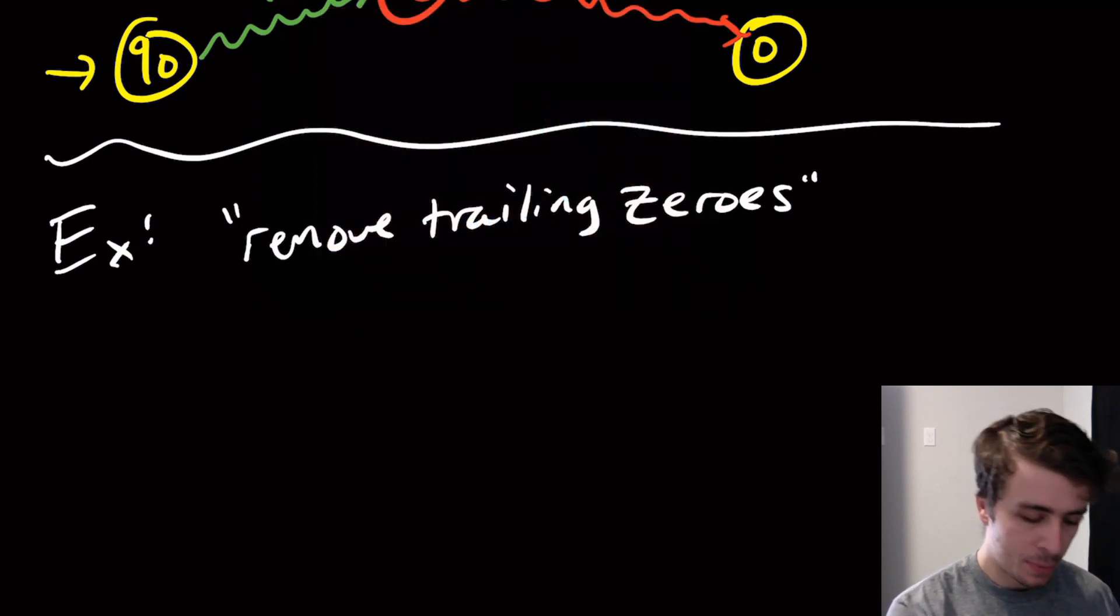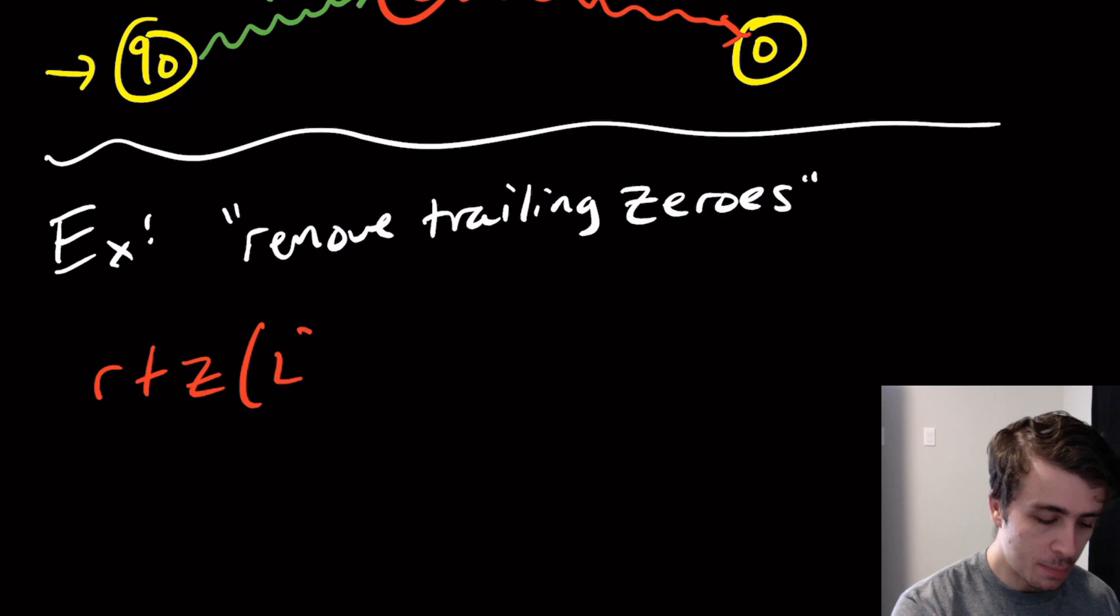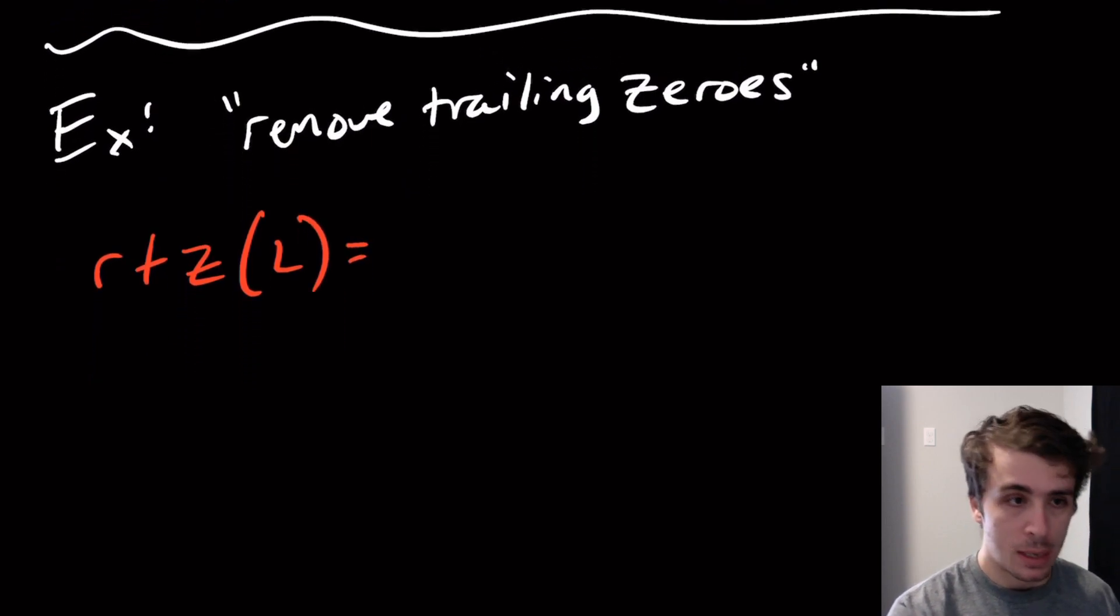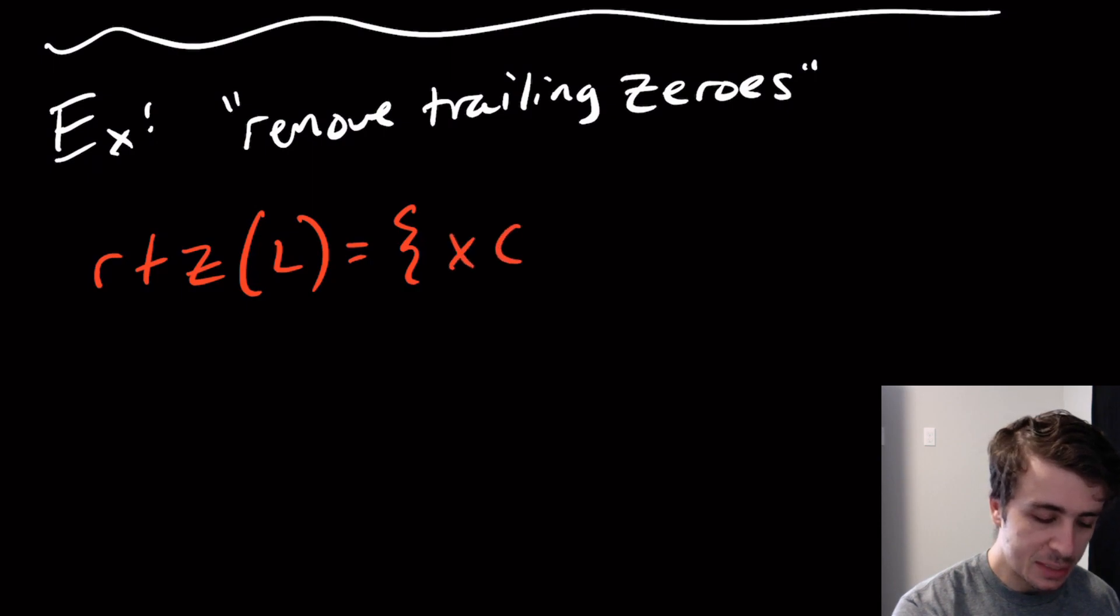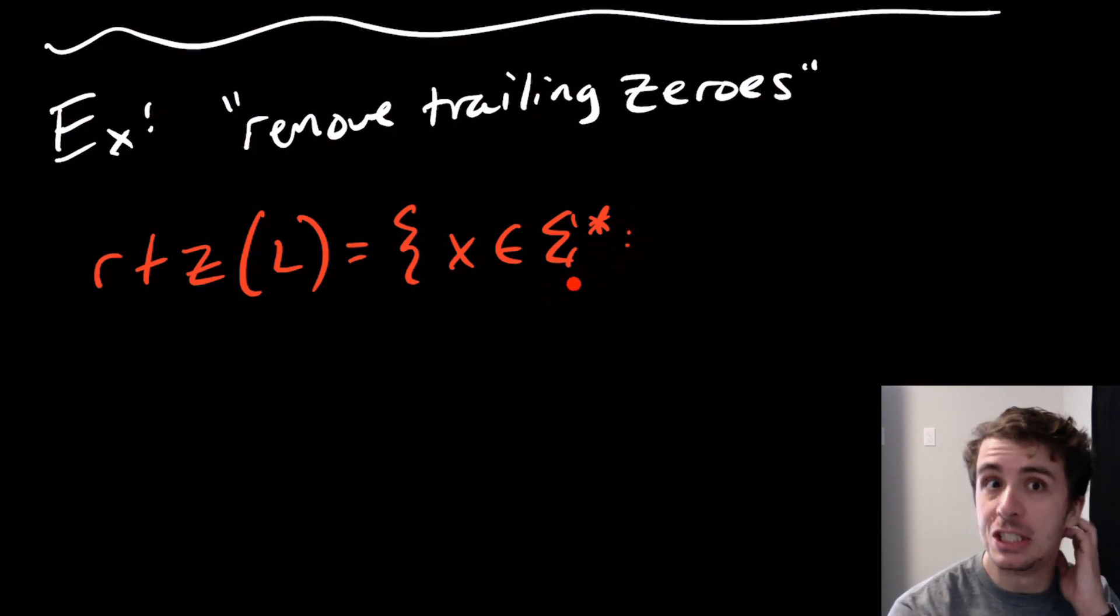What I'm going to call this language, this is the format that Professor Shallit uses in his book, RTZ for remove trailing zeros of a language L is going to be all the strings x in sigma star. But here we got to be a little bit careful because sigma has zeros in it, so this could imply that x is allowed to have zeros at the end.